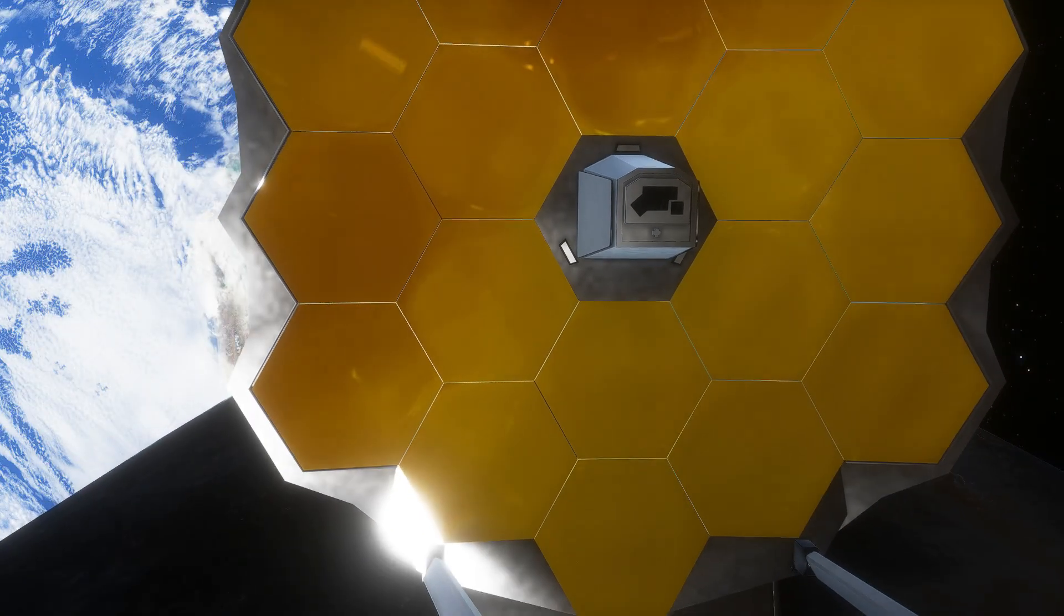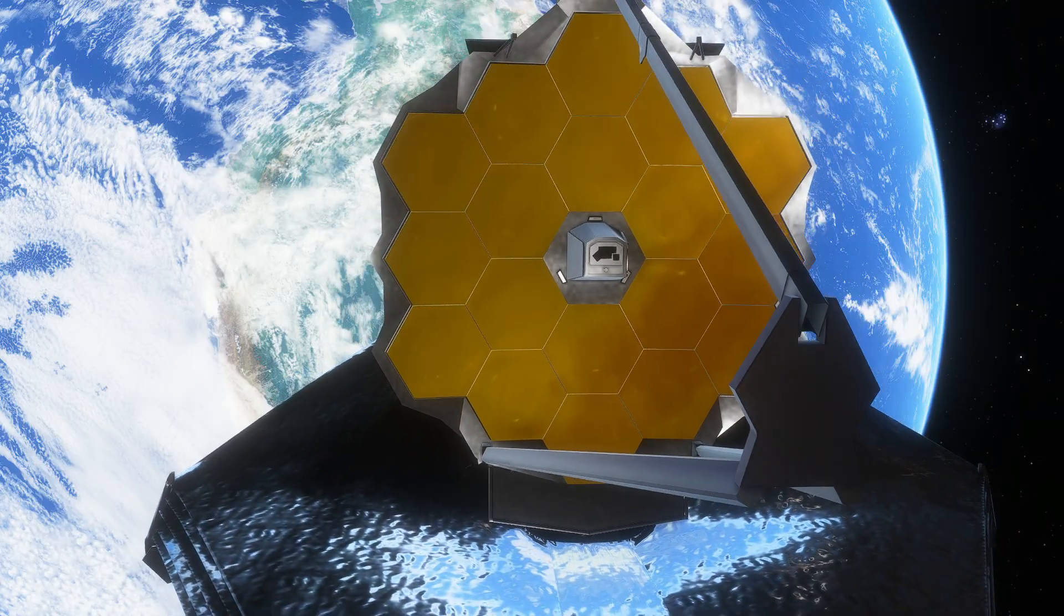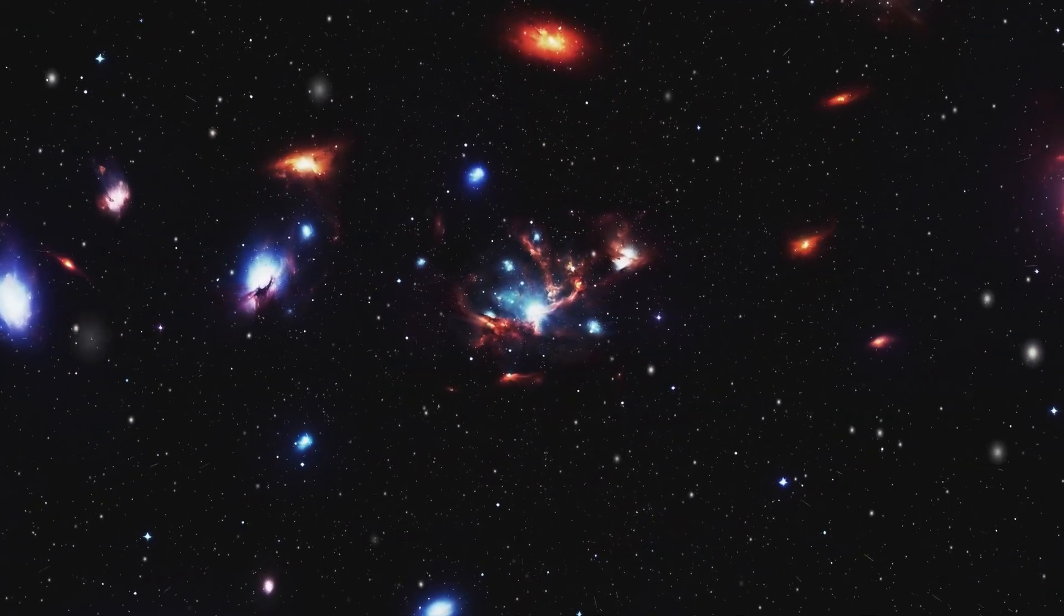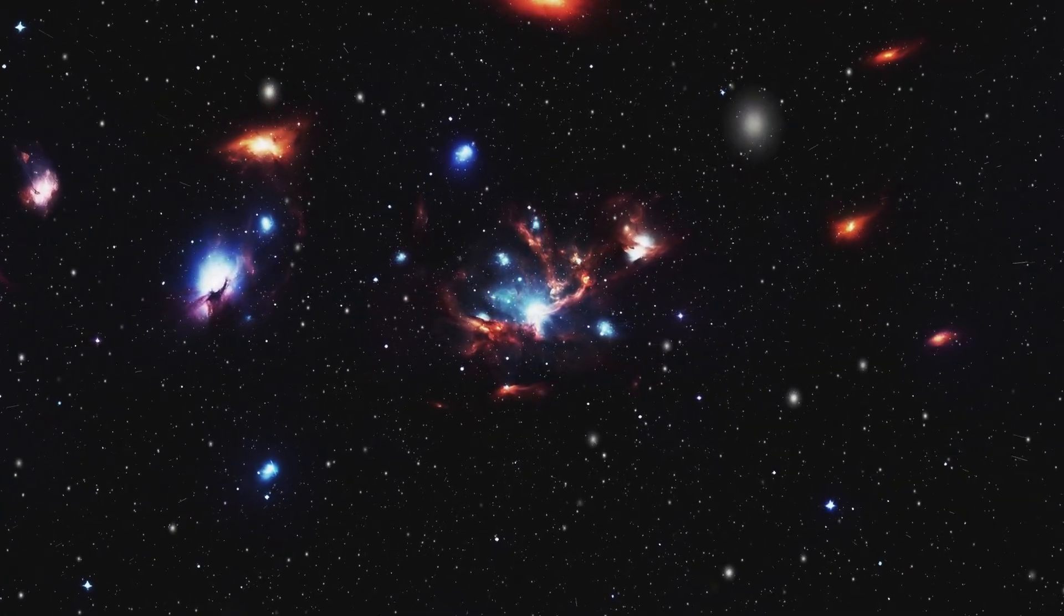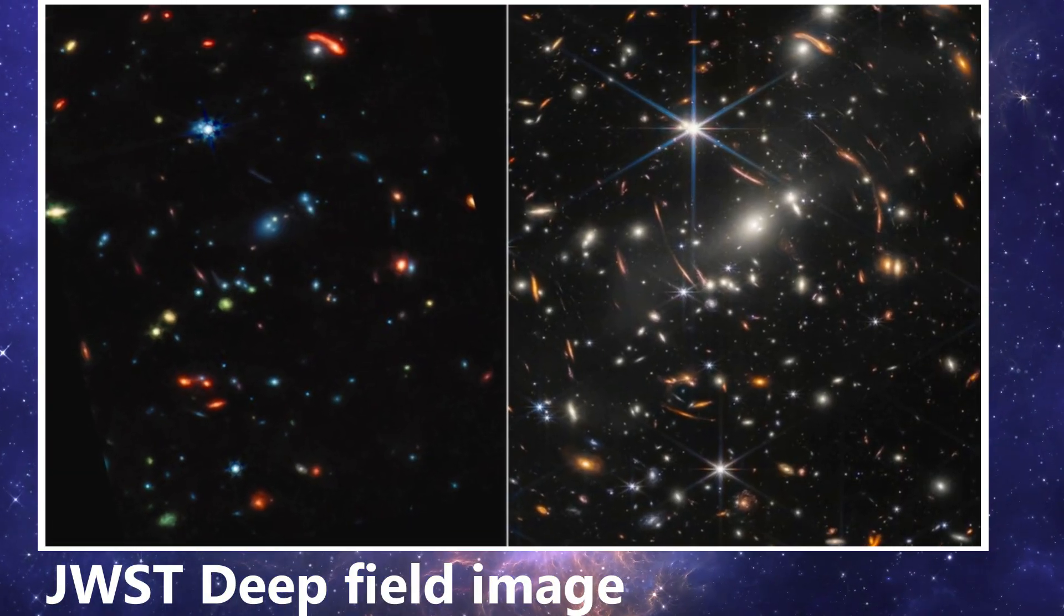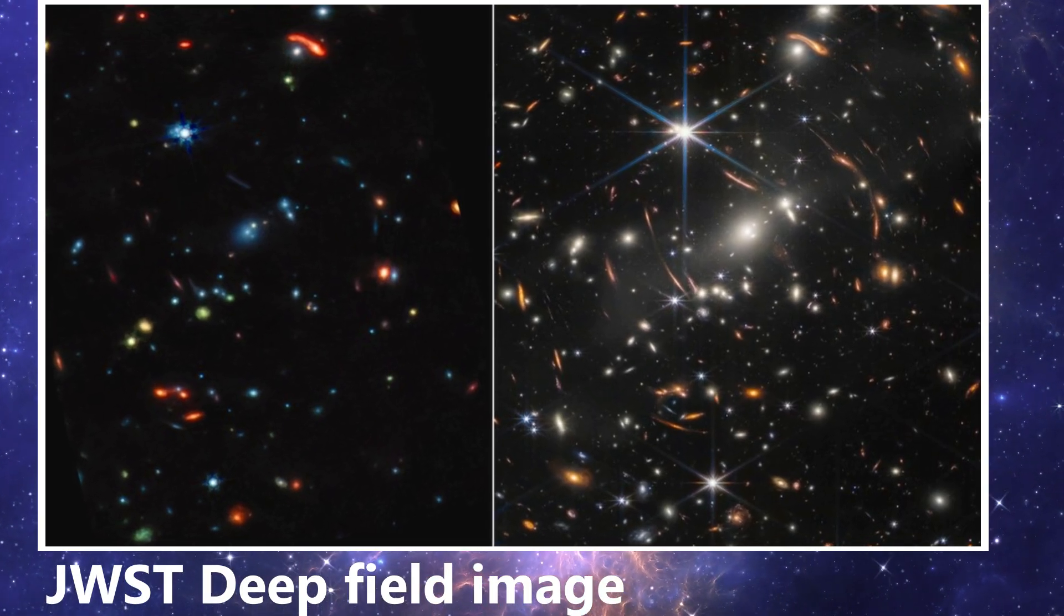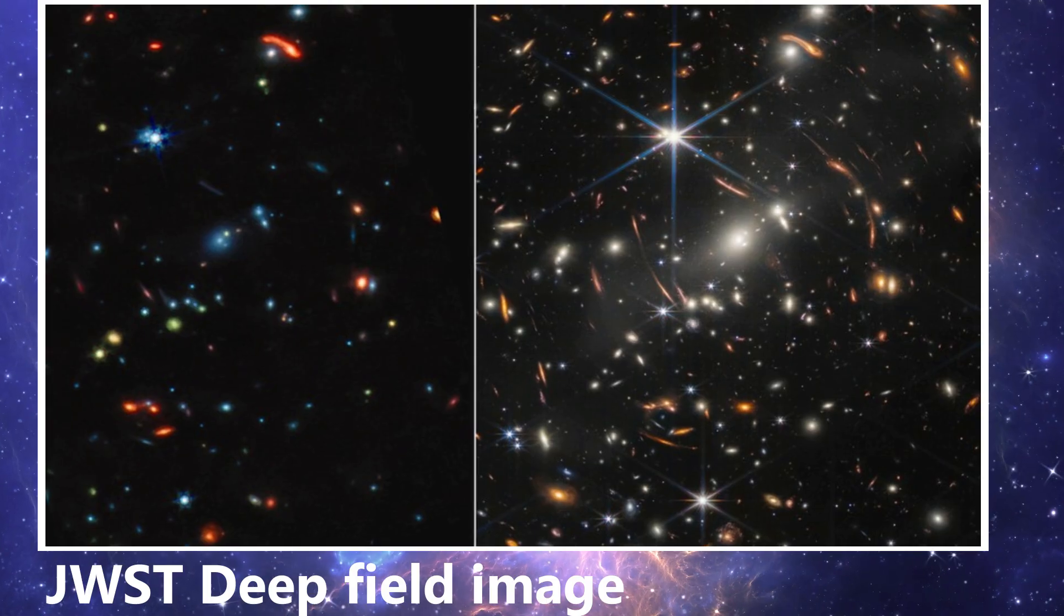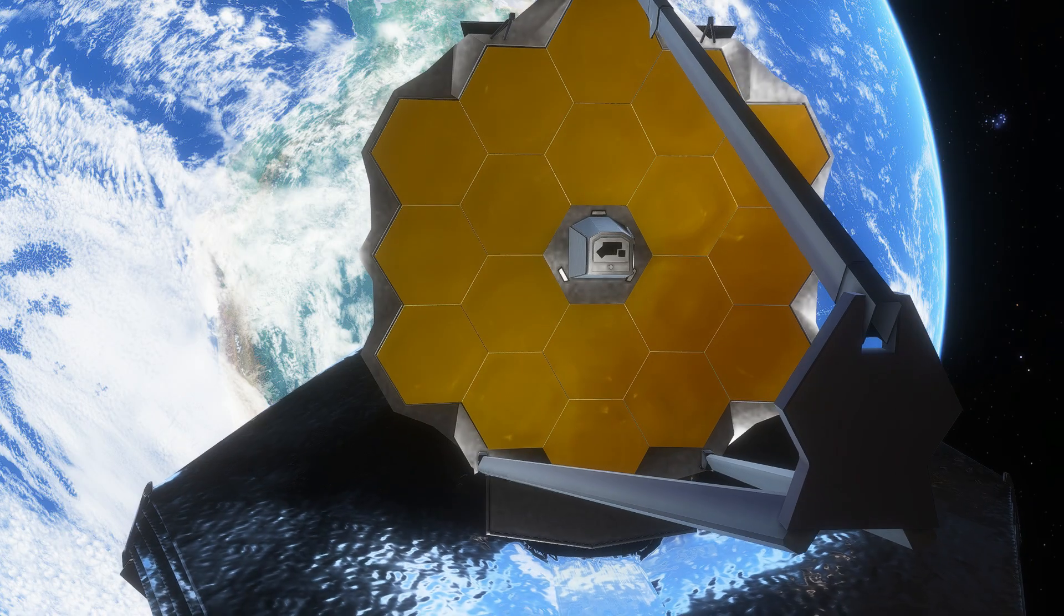When the James Webb Space Telescope first opened its golden eye, astronomers expected to find young, chaotic galaxies. Tiny clumps of stars just beginning to take shape in the early universe. Instead, what they saw made cosmologists rub their eyes in disbelief. In the Webb Deep Field images, galaxies appeared less than 300 million years after the Big Bang. Galaxies far too massive, too structured, too evolved for such an early age. Some of them contained as many stars as the Milky Way, even though the universe itself was still in its infancy.